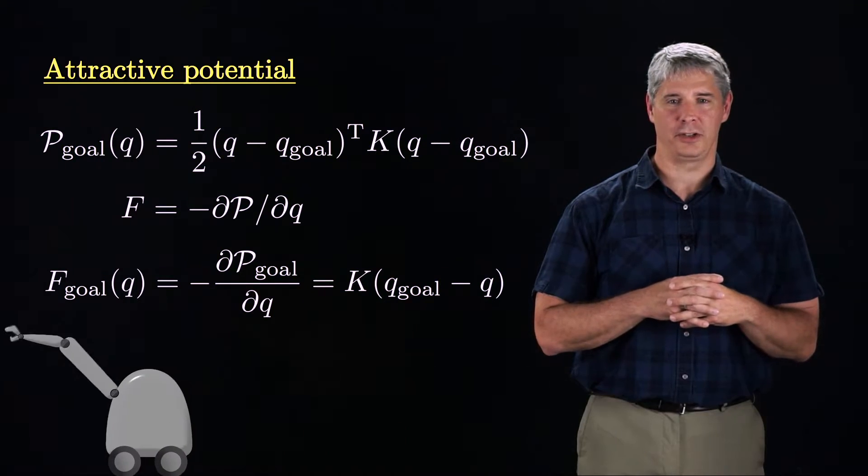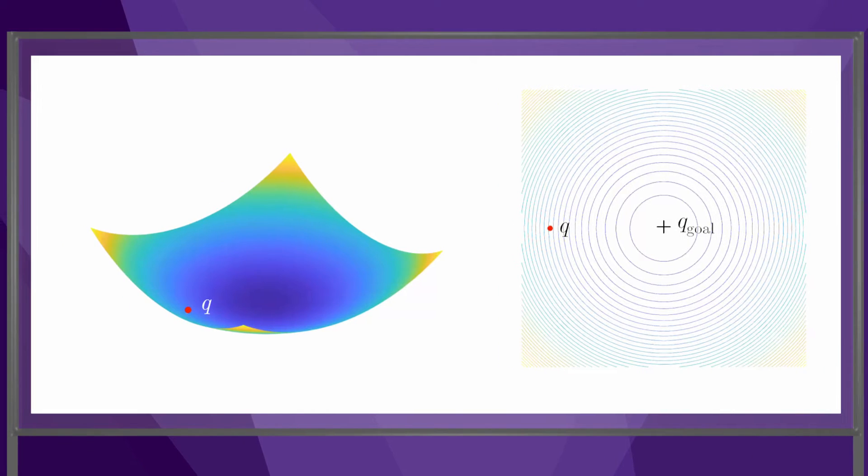We can plot the potential on a two-dimensional C-space as a quadratic bowl, where the Z-coordinate is the potential. The left figure shows the 3D plot of the quadratic bowl, while the right plot shows the equipotential contour plot on the 2D C-space. The goal configuration is at the bottom of the bowl, and the initial configuration is labeled Q.